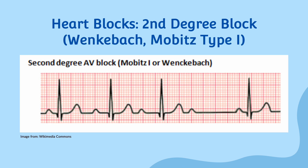Next, we'll talk about second degree heart blocks. These are more advanced forms of heart block, and they are further classified into two subtypes: Mobitz type 1, also known as Wenckebach, and Mobitz type 2. In both types, you have a delay of conductance from the heart's depolarization signal from the atria to the ventricles, and in some cases, complete failure of conductance.